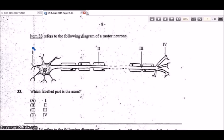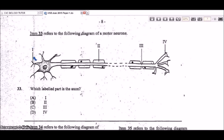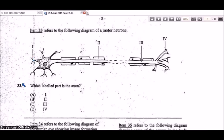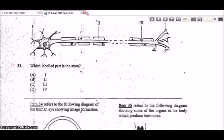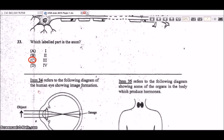Question 33 refers to a diagram of a motor neuron. It asks which labeled part is the axon — the thin fiber that sends electrical impulses away from the cell body. Three is pointing at the axon; one points at the dendrites, two at the myelin sheath, and four at the synaptic endings. The correct answer is C, three.